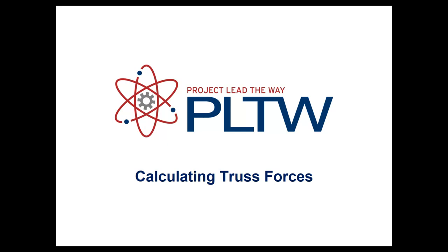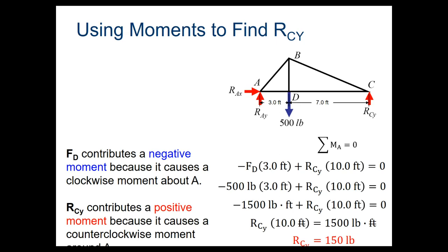We're going to look at an example of how you start and what things to look for. The very first thing you want to do is draw a free body diagram. Here we have a free body diagram of a bridge where both supports have already been replaced with reaction forces. At point A we have two forces — one in the X direction and one in the Y — drawn in the direction we most likely think they're going.